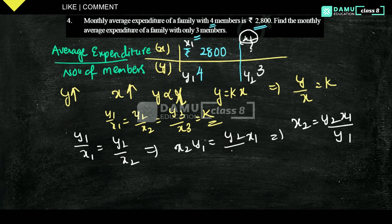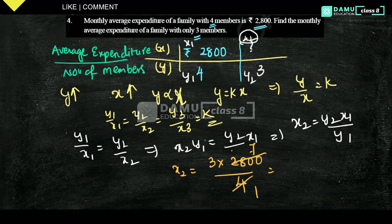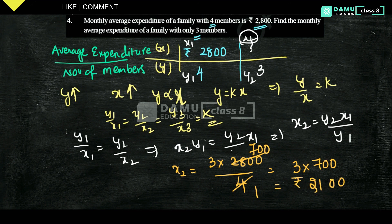Substituting the values: x2 = y2 times x1 by y1 = 3 times 2,800 by 4. Simplifying: 3 times 700 = 2,100 rupees. So 2,100 rupees is the monthly average expenditure for a family of three members.